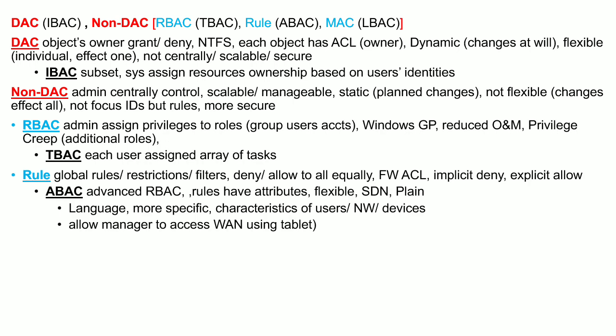In non-discretionary access control there is also a rule-based access control model, where rules are global restrictions or filters which allow or deny access to all subjects equally — there is no middle ground. Firewalls implement this rule-based access control model using access control lists. There is an implicit deny, meaning you must explicitly allow access through a rule; otherwise access is not allowed.